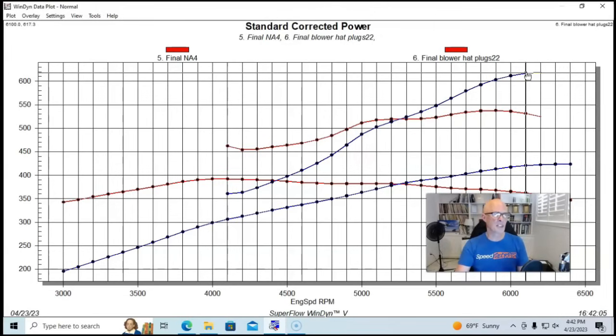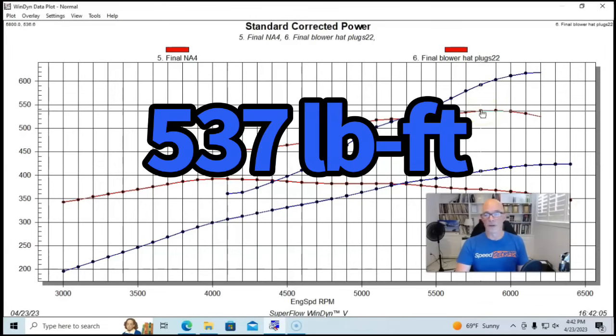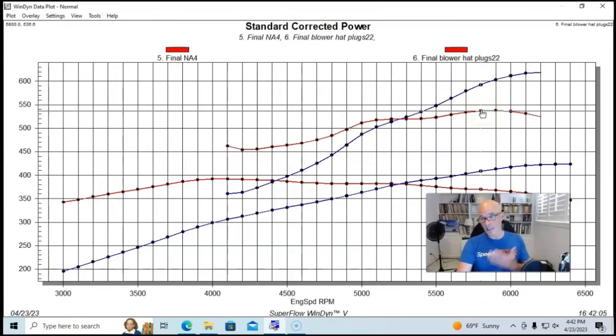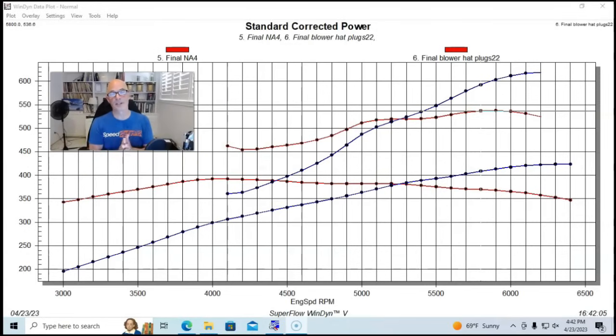But run with the pulley that they supply with the blower, this thing produced 617 horsepower and 537 foot pounds of torque. So it did well—it did kind of exactly what we expected. It didn't make nearly as much, or didn't make quite as much as the 347.